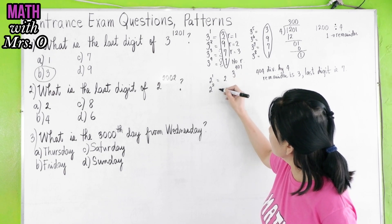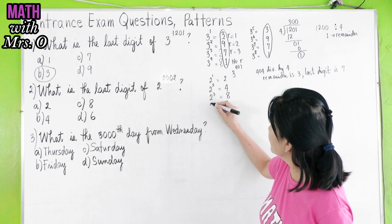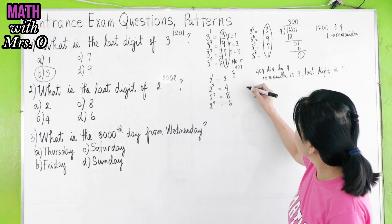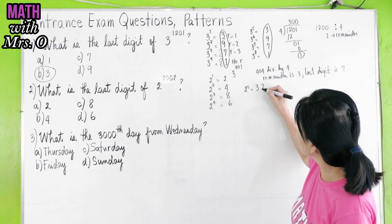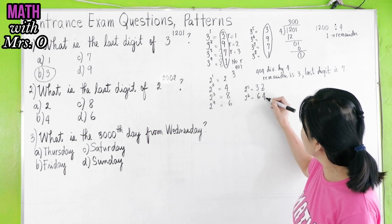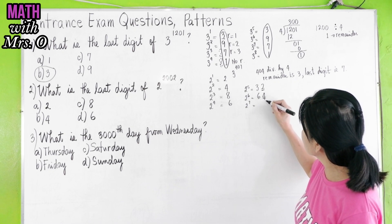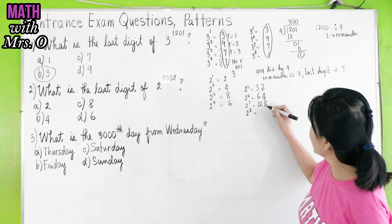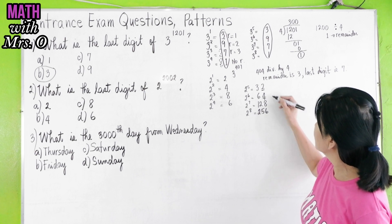2 to the 1 gives you 2. 2 squared gives you a last digit of 4. 2 cubed is 8, so it's the last digit. 2 to the 4th is 16, the last digit is 6. 2 to the 5th is 32, so the last digit is 2. 2 to the 6th, 32 times 2, that's 64, last digit is 4. 2 to the 7th, 4 times 2 is 8. 2 to the 8th, 8 times 2 is 16, or 256.